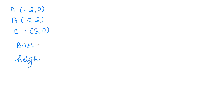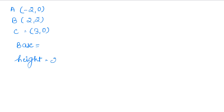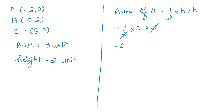Now we calculate the area of the triangle. Looking at the base along the x-axis: from minus 2 to 3 gives us 5 units. The height is the perpendicular distance from vertex B up to the x-axis, which is 2 units. Area equals half into base into height, so area equals half into 5 into 2, which gives area equals 5 square units.